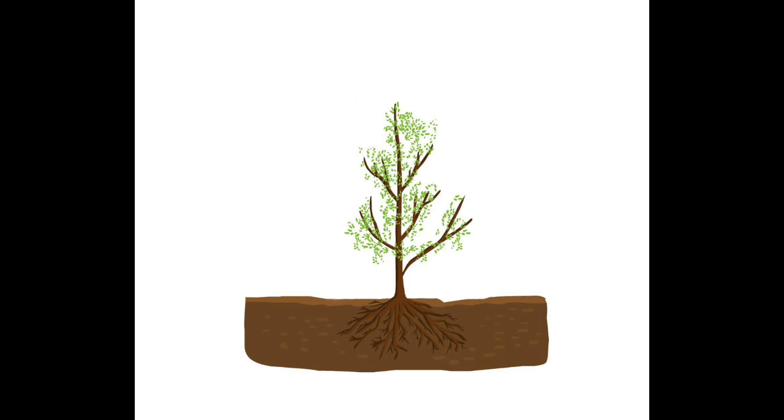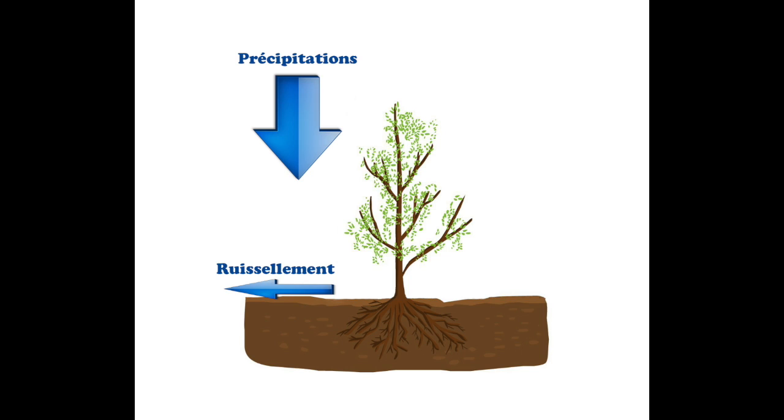Alors que se passe-t-il lorsque la pluie arrive sur votre sol ? Eh bien tout d'abord, il y a une partie de cette eau qui va s'échapper en surface, c'est ce qu'on appelle l'eau de ruissellement. Ensuite,